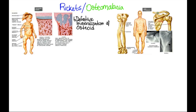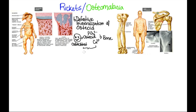You may be wondering, what is osteoids? Let's go back to osteoblasts. These are cells that lay down bone. However, they don't produce bone — they actually produce a material called osteoids. This osteoid then gets mineralized by calcium and phosphate to produce the final bone. In rickets and osteomalacia, this mineralization process is defective.